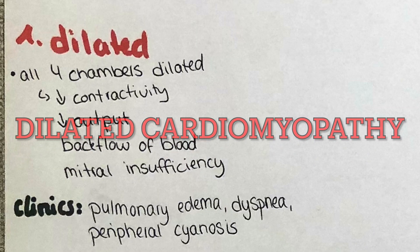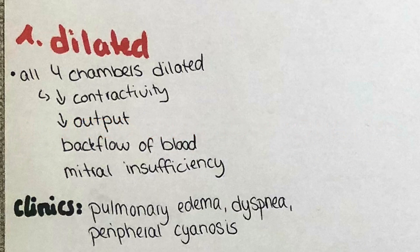In the dilated form of cardiomyopathy, all four chambers of the heart are dilated, which leads to decreased contractility, decreased output, backflow of the blood and eventually mitral insufficiency. The backflow of blood leads to pulmonary edema and therefore patients often experience difficulty breathing. Due to the decreased cardiac output, the peripheral tissues are underperfused, which leads to peripheral cyanosis — a bluish discoloration of the skin.